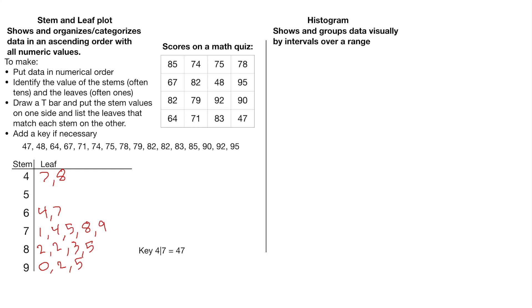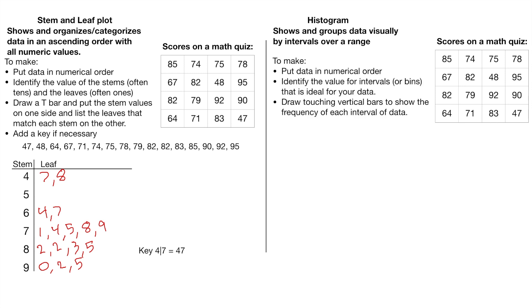That is called a histogram. This shows and groups data visually by intervals over a range. So it's kind of similar to a stem and leaf plot. So we're actually going to use the same data. And to do this, we're going to put the data in numerical order first. Again, my recommendation, not required.